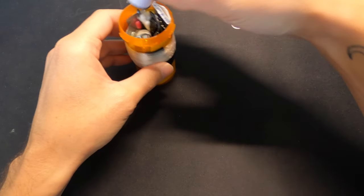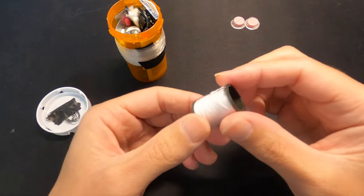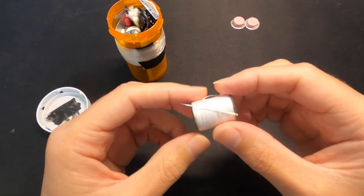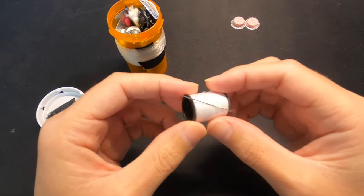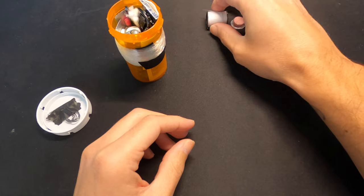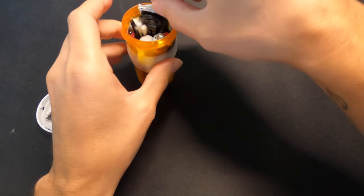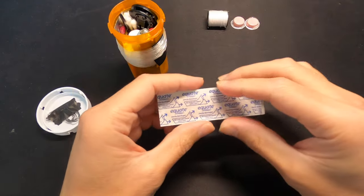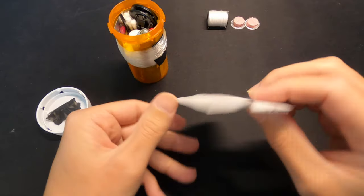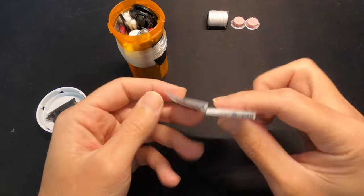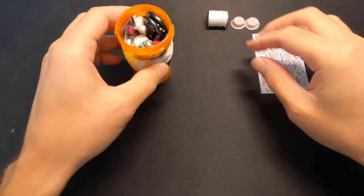Next up is a little spool of thread with a needle. Never know. Might have to sew something up on the fly. Hopefully not your own skin. But speaking of first aid, got a couple band-aids here. They're not going to help you if you really, really get hurt, but they're good to have just in case you get a small cut on your finger, a deep cut. Definitely helps.